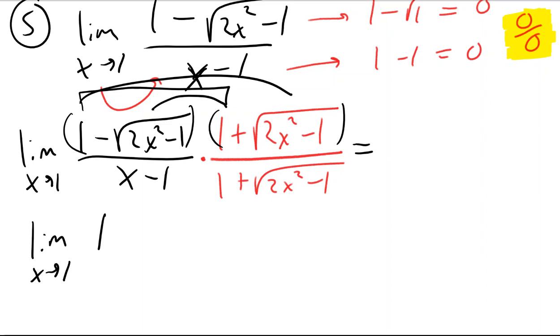Anytime you multiply something by its conjugate, the outer and inner cancel, and you can skip that. And then what happens when I multiply negative square root of 2x squared minus 1 times positive square root of 2x squared minus 1? Minus 2x squared plus 1 plus 1. Very good. Make sure you distribute the negative.